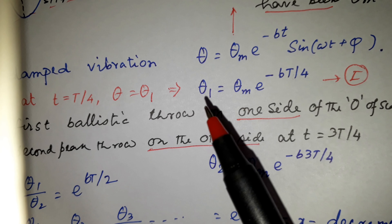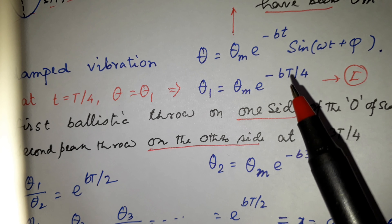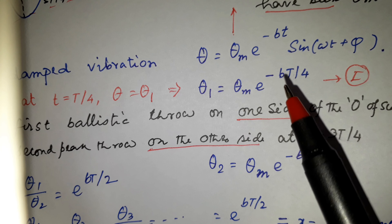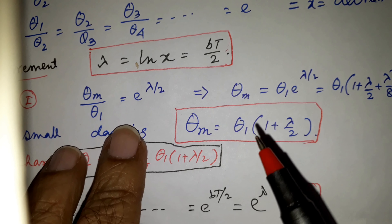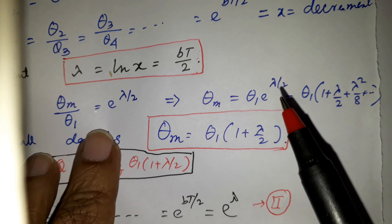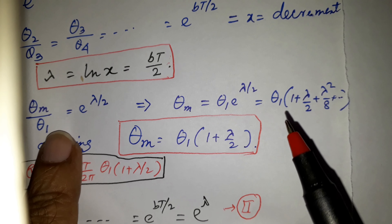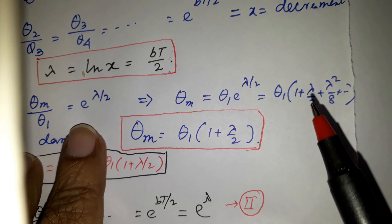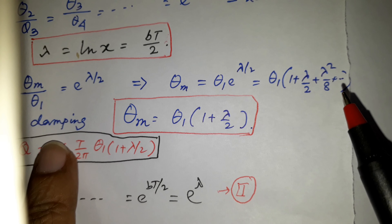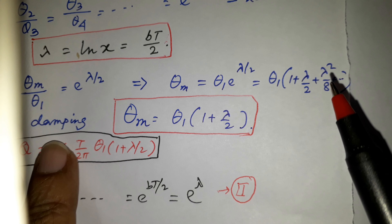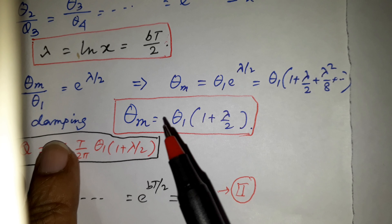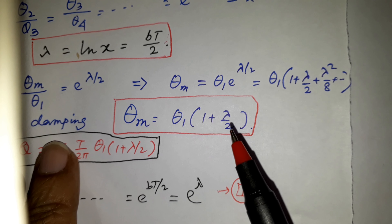Theta_m divided by theta_1 equals e to the power lambda/2, giving theta_m equals theta_1 times e to the power lambda/2. Expanding e to the power lambda/2 as 1 plus lambda/2 plus lambda squared/8 plus higher terms — lambda being small, lambda squared/8 and higher terms can be neglected — leaving theta_m equal to theta_1 times (1 plus lambda/2).